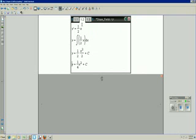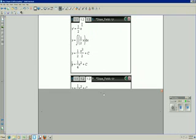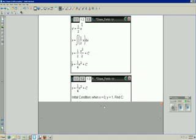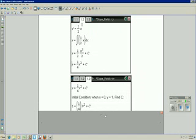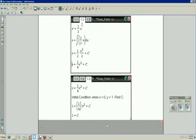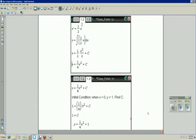And we get Y equals one fourth X squared plus a constant. Using our initial condition that X equals zero and Y equals one that I typed in, substituting, we get that the constant is one. So therefore, Y equals one fourth X squared plus one.